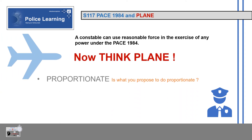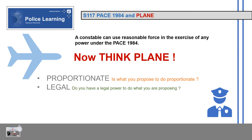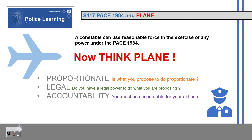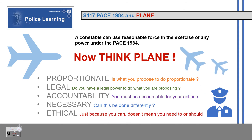Now think PLAIN. Proportionate — is what you propose to do proportionate? Legal — do you have a legal power to do what you are proposing? Accountability — you must be accountable for your actions. Necessary — can this be done differently? Ethical — just because you can doesn't mean you need to, or should.